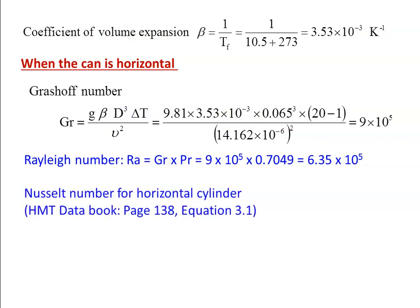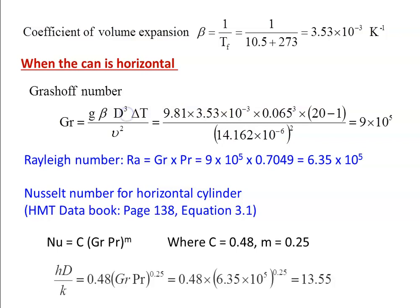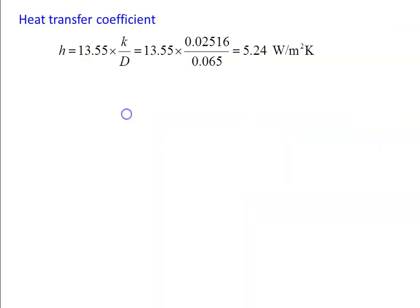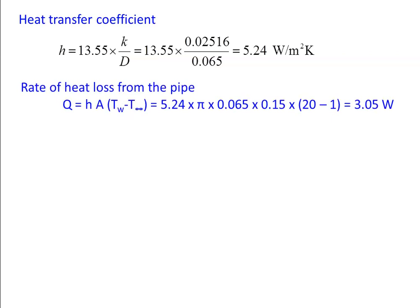For the horizontal cylinder, from page 138 equation 3.1: Nu = C·(Gr·Pr)^m, where C = 0.48 and m = 0.25. So h·D/k = 0.48×(Gr·Pr)^0.25 = 13.55. Heat transfer coefficient h = 13.55×k/D = 13.55×0.02516/0.065 = 5.24 W/m²K. Rate of heat loss Q = h·A·(Tw − T∞) = 5.24×π×0.065×0.15×19 = 3.05 W.